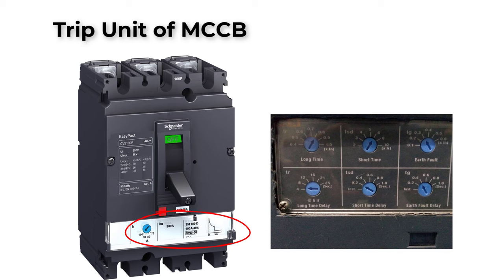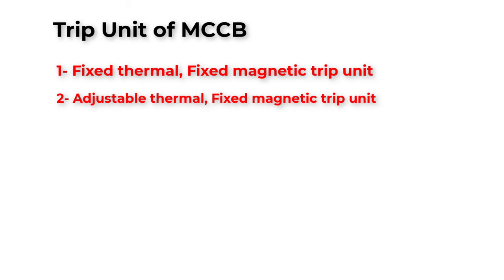The trip unit is responsible for protection against overcurrent and short circuit. In molded case circuit breakers, we have four different configurations for trip units. Fixed thermal, fixed magnetic trip unit. So we can't change the settings of overcurrent and short circuit protection. Number two is adjusted thermal, fixed magnetic trip unit. Here we can change only the setting of overcurrent.